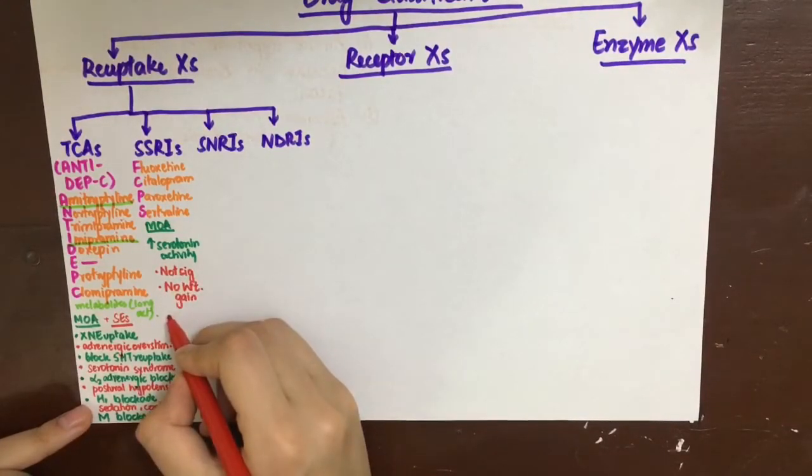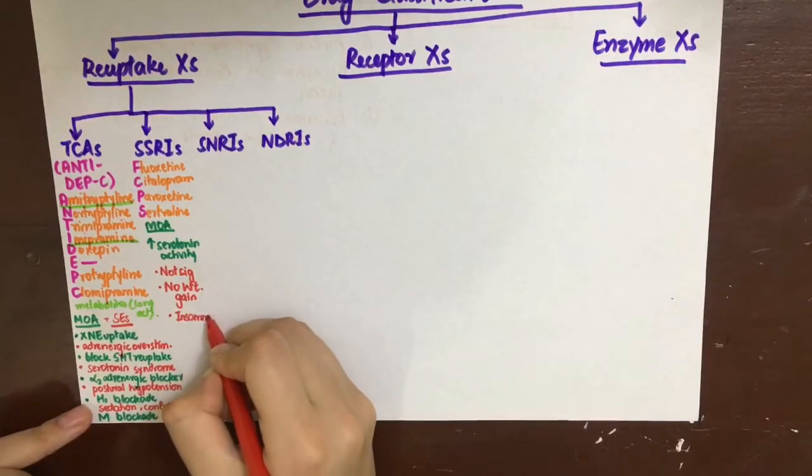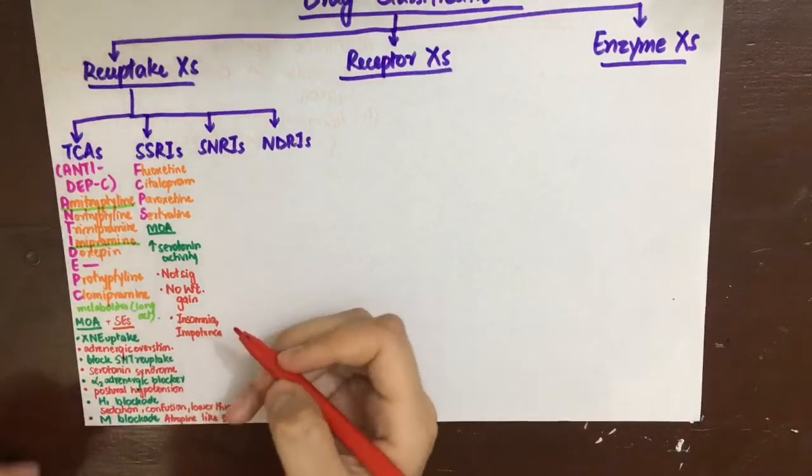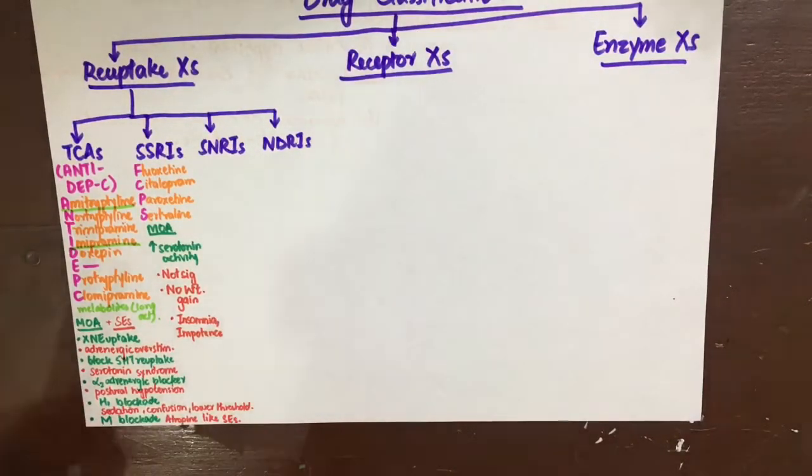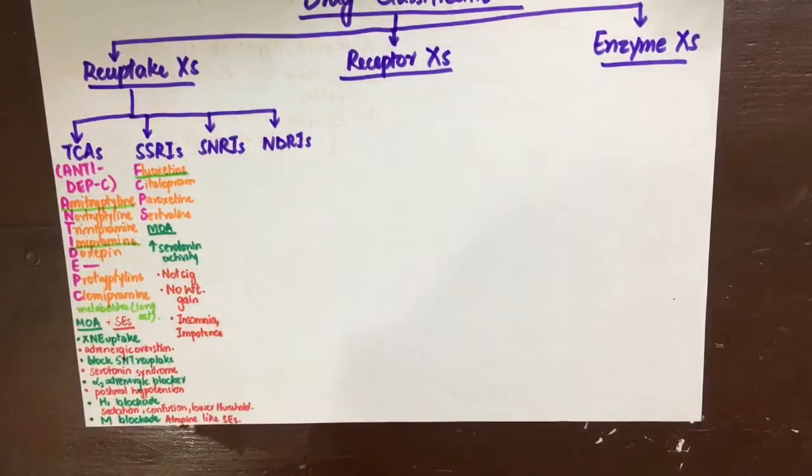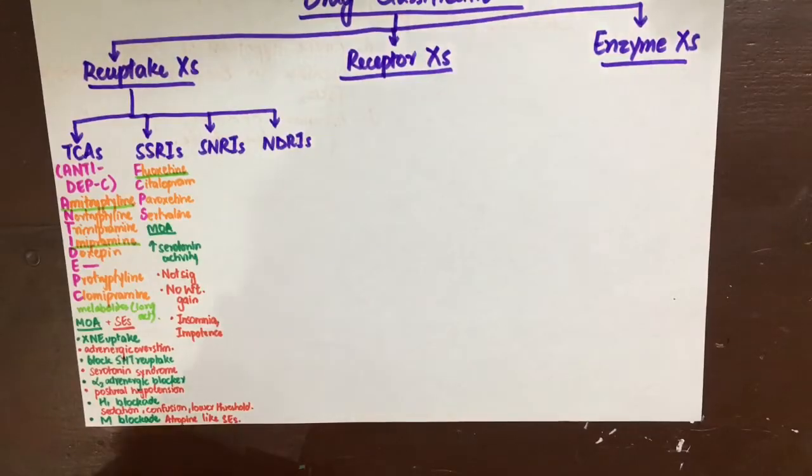They do, however, cause insomnia and impotence. Among all of the SSRIs, fluoxetine has active metabolites and thus a longer action. Now one side effect is bruxism, that is grinding of the teeth. This is associated with any drug that increases serotonin.